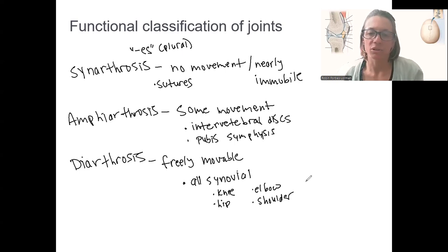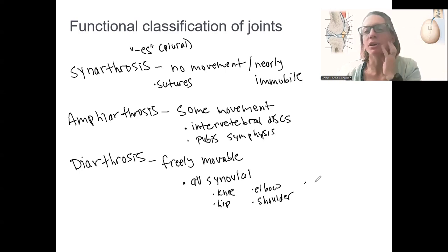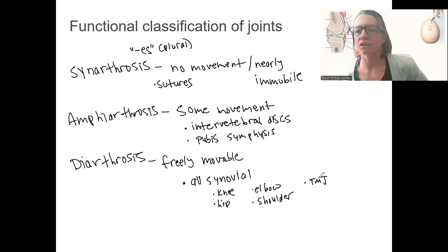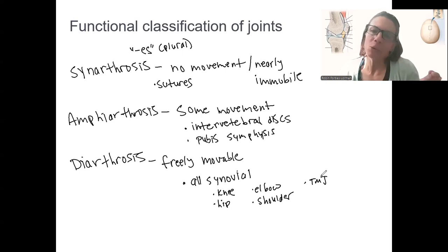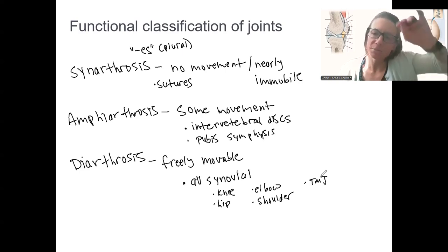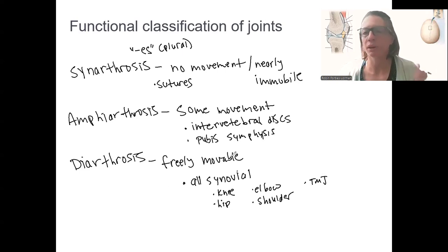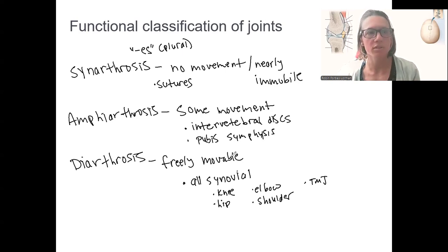Also included are all the joints in your fingers, your mandible — that's the temporomandibular joint — and the sacroiliac joint, among many others. These are all freely movable, though they can vary in how mobile they are based on type, which we'll get into in a separate video on synovial joints.